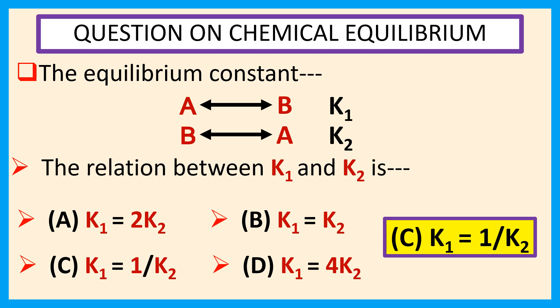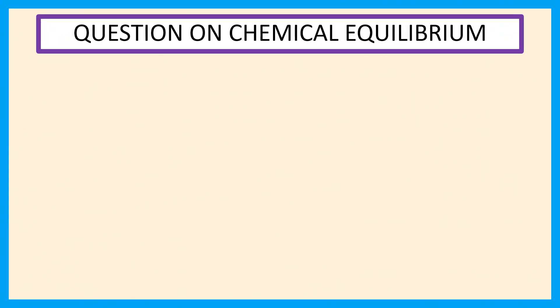Explanation we will see in the next slide. Our first reaction is A to B. For this reaction, equilibrium constant K1 equals concentration of B by concentration of A.